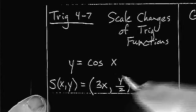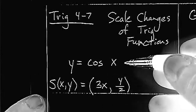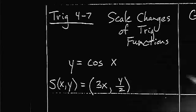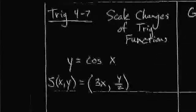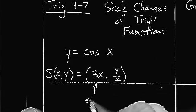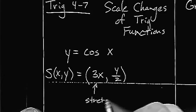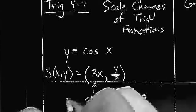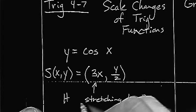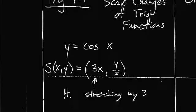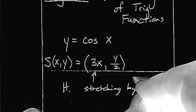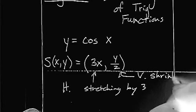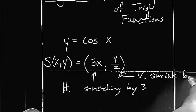Let's suppose our basic parent function was y equals cosine x, and we are stretching by 3 — so that would be a horizontal stretch by 3 — and we have a vertical shrink by 1 half.